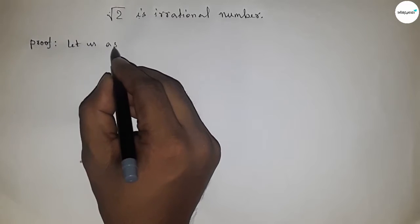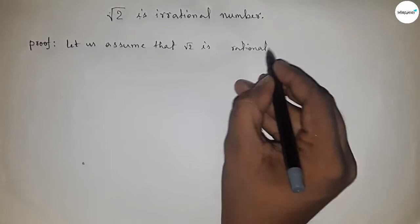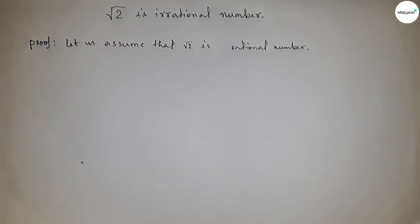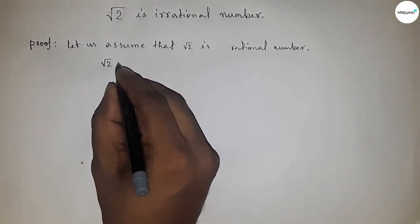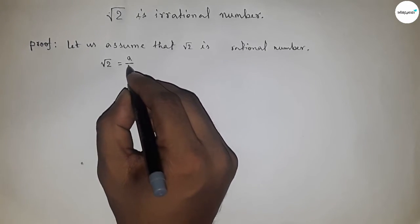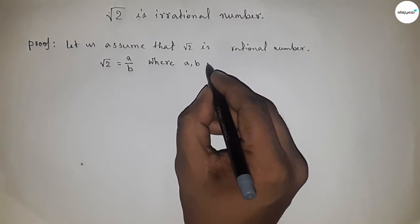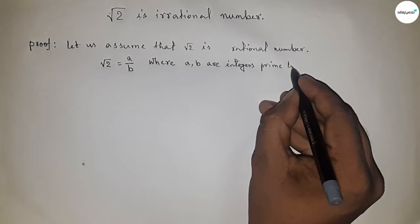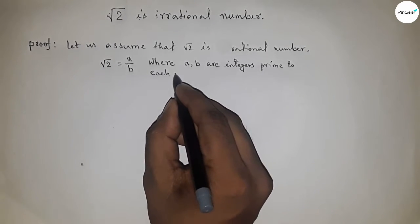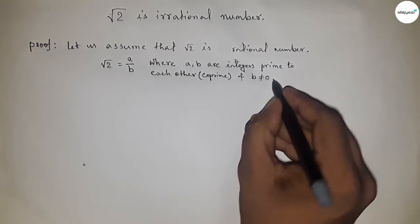First, let us assume that root 2 is a rational number. A rational number can be written in the form p by q, so we write root 2 equal to a by b, where a and b are integers and they are co-prime to each other.